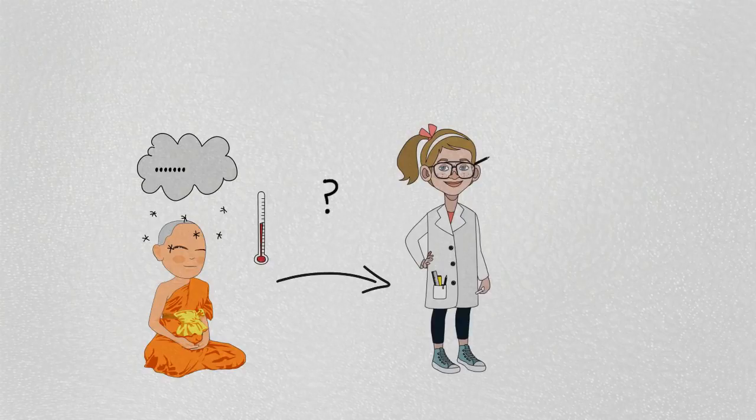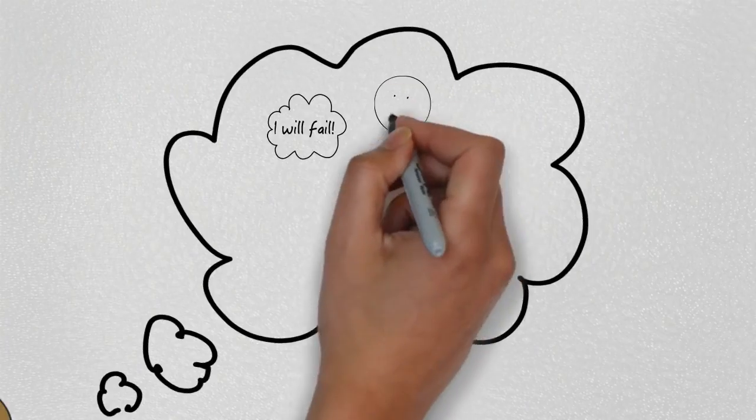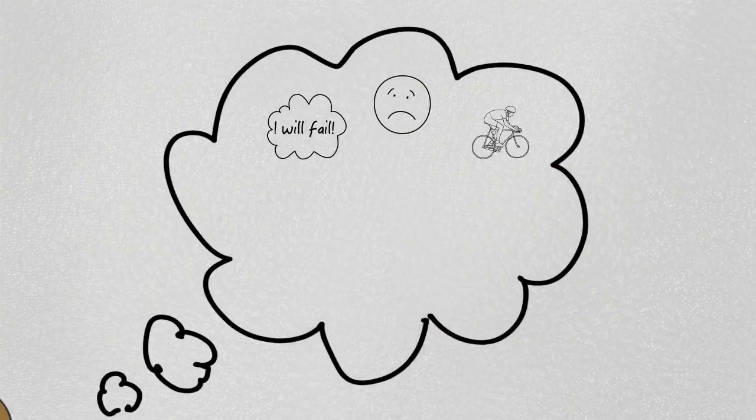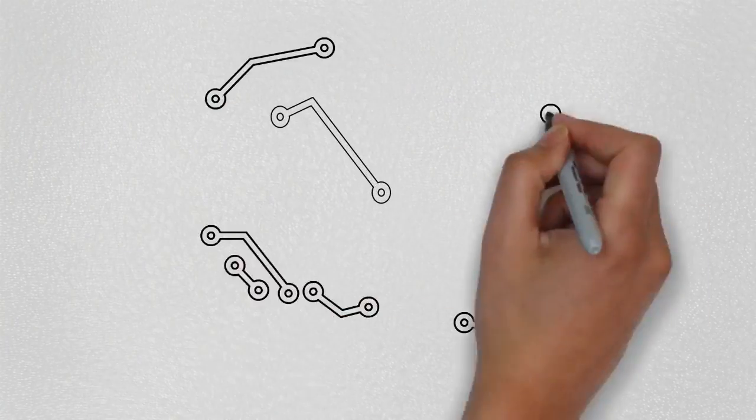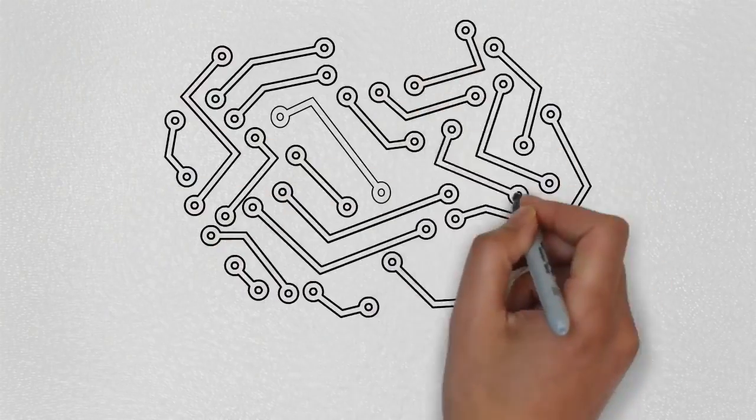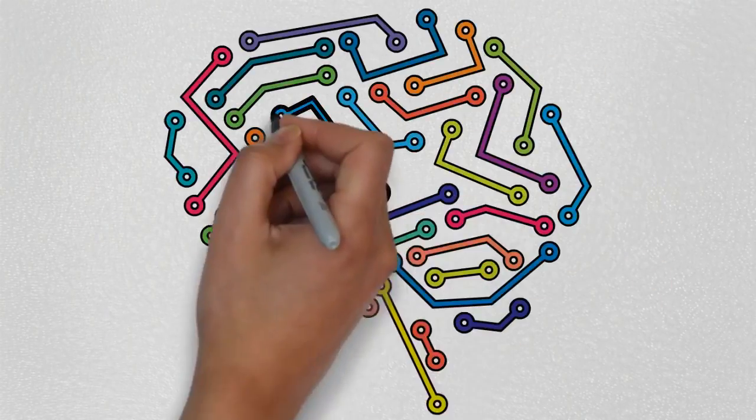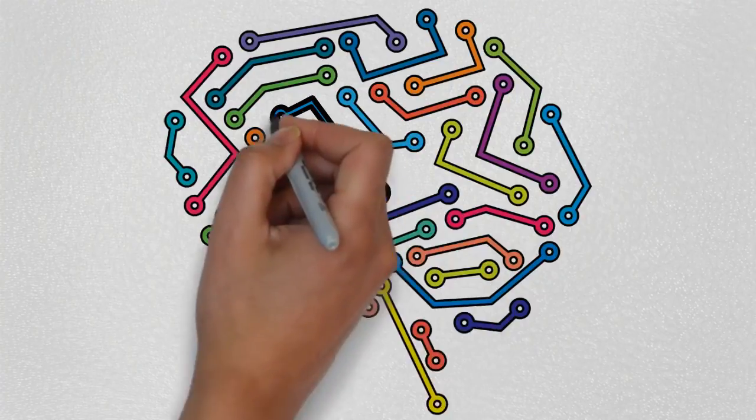In the last 10 years, scientists have discovered that every time we think, feel, or learn something new, a neural connection appears in our brain. Those things that we repeat the most, like our habits, make these connections grow stronger and stronger.